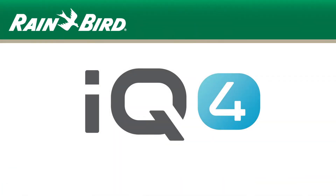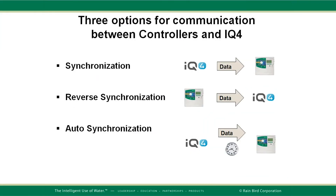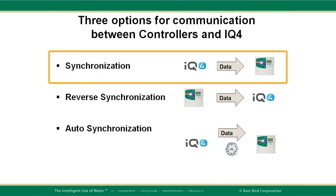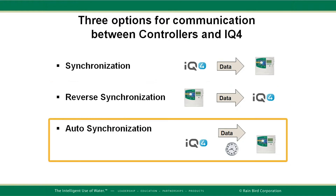Rainbird IQ4 provides different options for communication between controllers and the IQ system. The three communication types are synchronization, reverse synchronization, and autosynchronization.